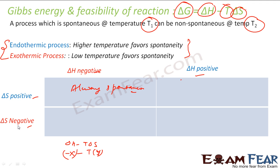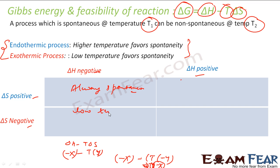Case 2: if delta H is negative and delta S is also negative. Then delta G equals (minus X) minus T times (minus Y), which gives TY minus X. If temperature is very high, delta G becomes positive and the reaction is non-spontaneous. So only at low temperature is the reaction spontaneous — it is spontaneous only at low temperature.